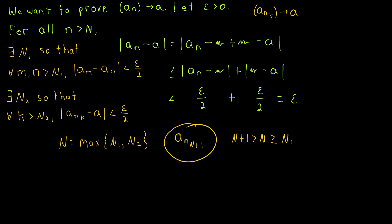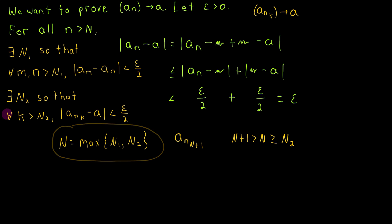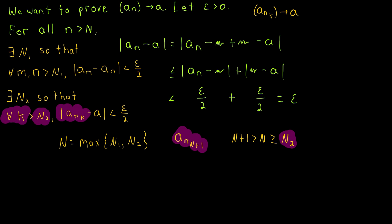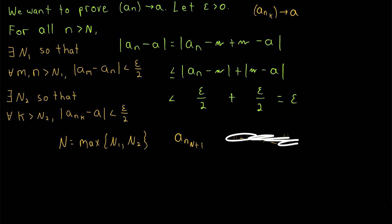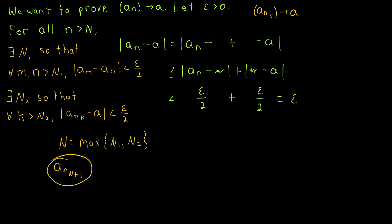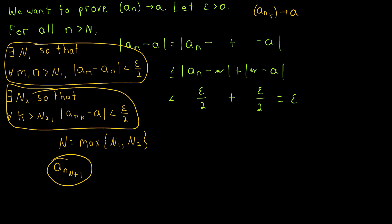The easier-to-understand part: since N+1 is greater than N, which is greater than or equal to N2, we are more than N2 terms into the subsequence. So this term must be within epsilon over two of the limit, because every term of the subsequence after the N2th term is within epsilon over two of A. And so ANₙ₊₁ — this specific term of the subsequence that is far enough along in both the original sequence and the subsequence — is what our squiggle should be. This is the key to our proof: we'll subtract and add ANₙ₊₁ to make the magic happen.